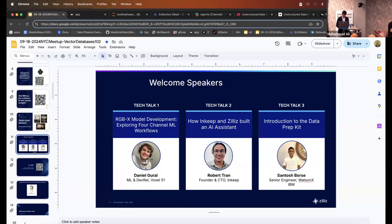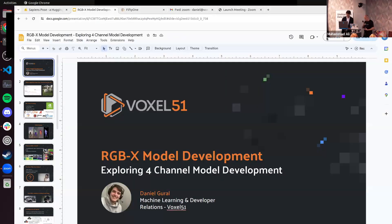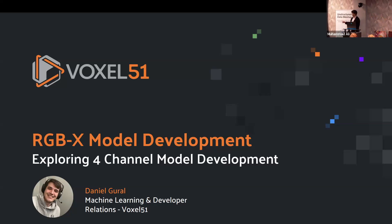This next talk is very interesting — we were discussing what the speaker is working on earlier. Let me stop sharing. My name is Dan, I'm from Voxel51. We're the lead maintainers of open-source FiftyOne, which is a computer vision curation and refinement tool for your datasets.